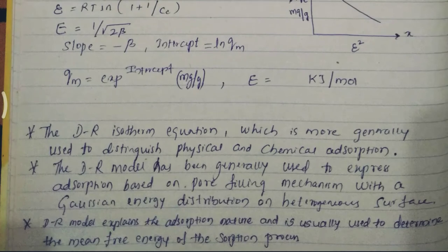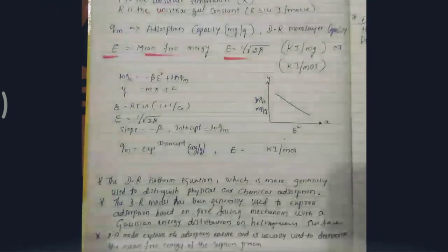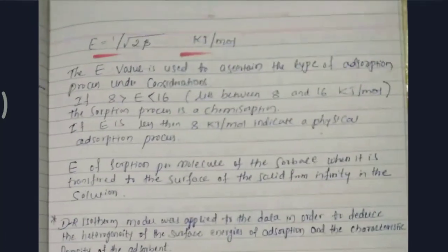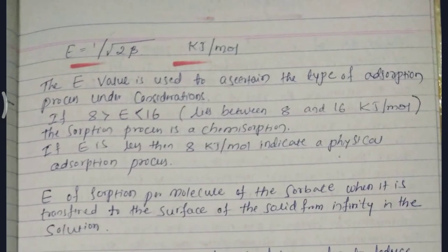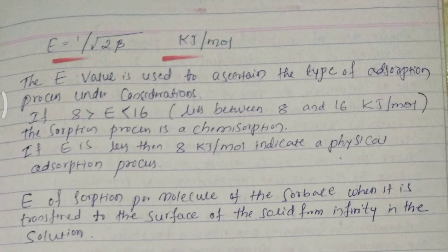DR model explains the absorption nature and is usually used to determine the mean free energy of the absorption process. Mean free energy formula will be E equal to 1 by root 2 beta, kilojoule per mole is the unit. The E value is used to assert the type of adsorption process under consideration.